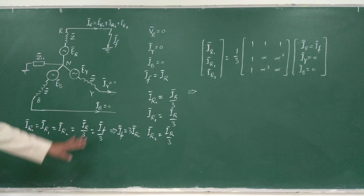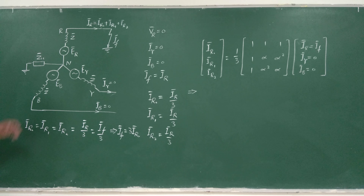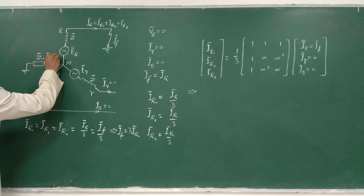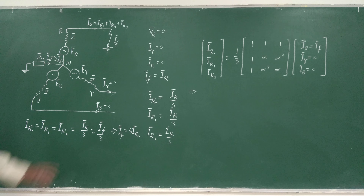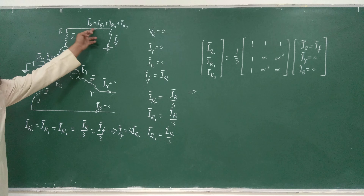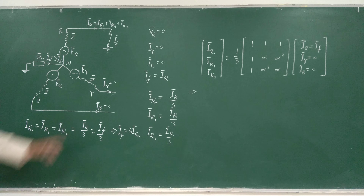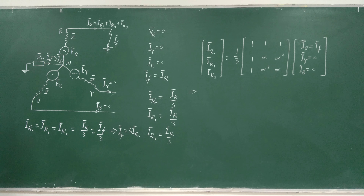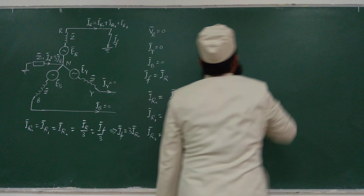So the fault current IF is three times IR0. That is also the current through the neutral IN. There is one loop for fault current from R to ground, then through neutral back to R. The magnitude of that fault current is 3 times IR0. We have now evaluated the zero, positive, and negative sequence currents for this SLG fault.